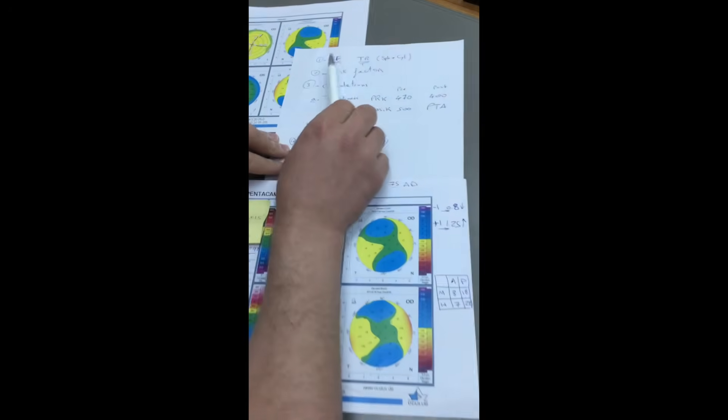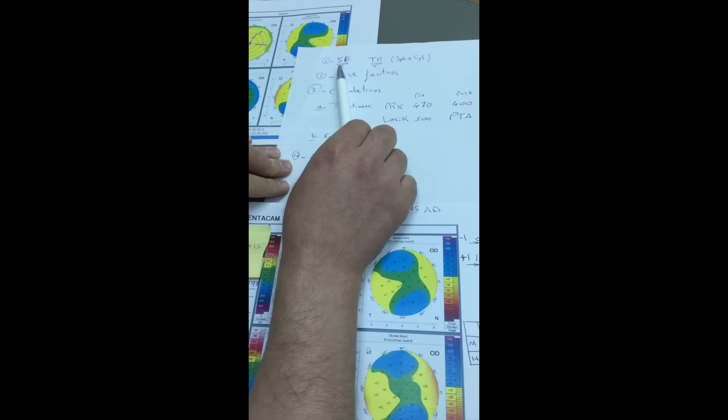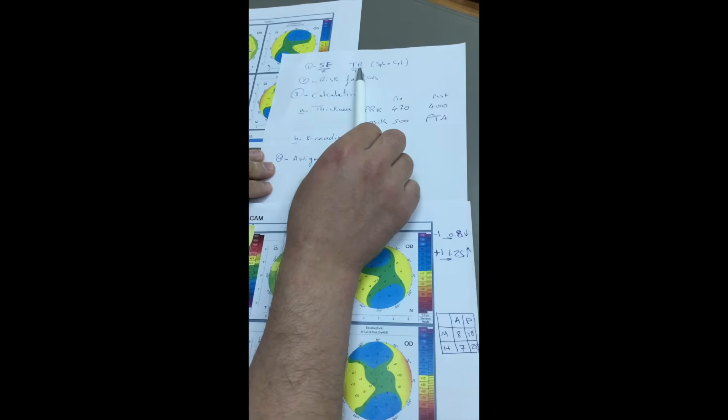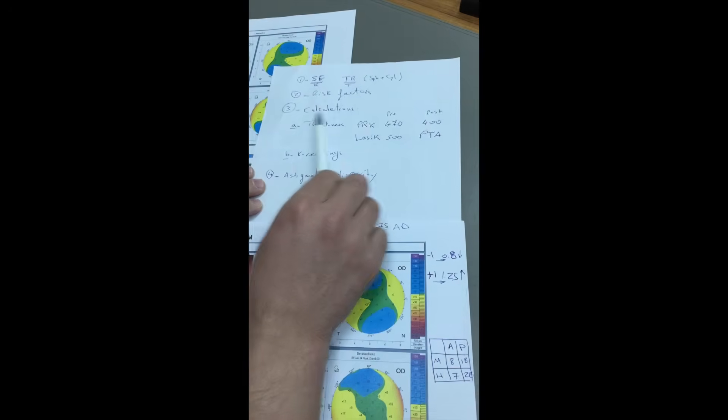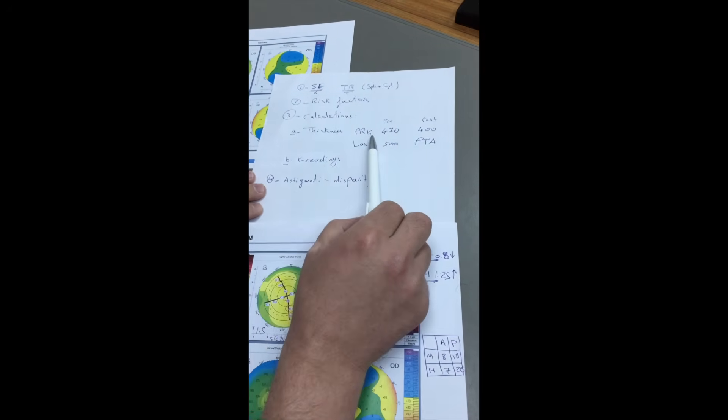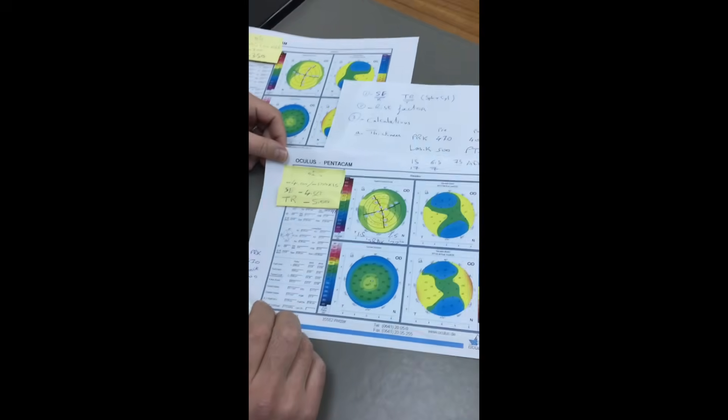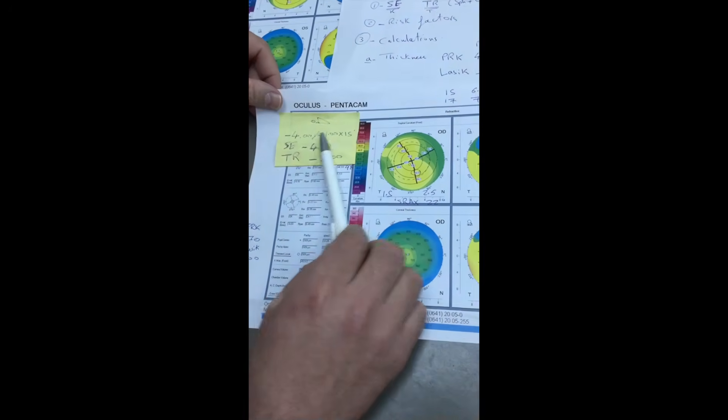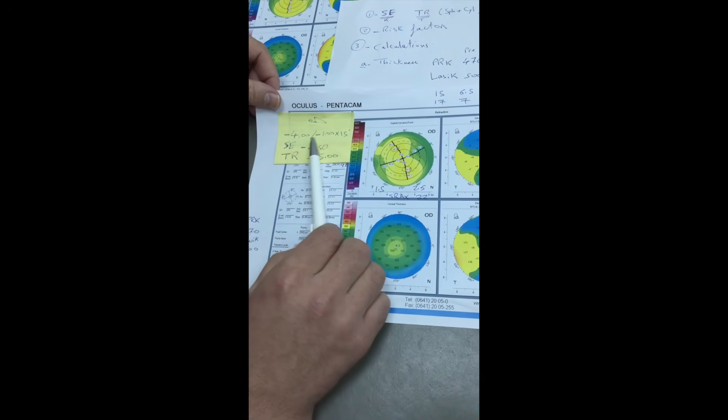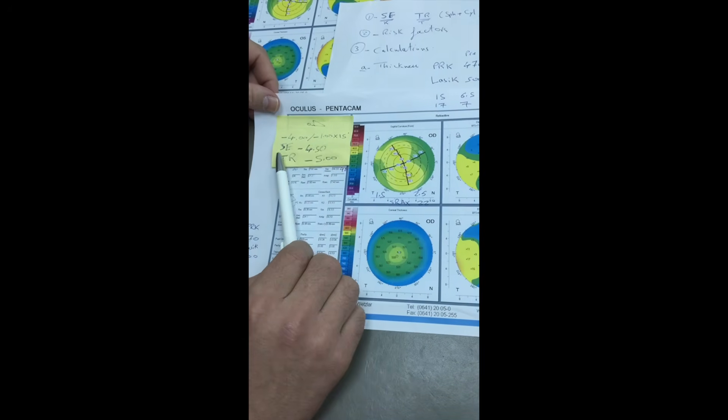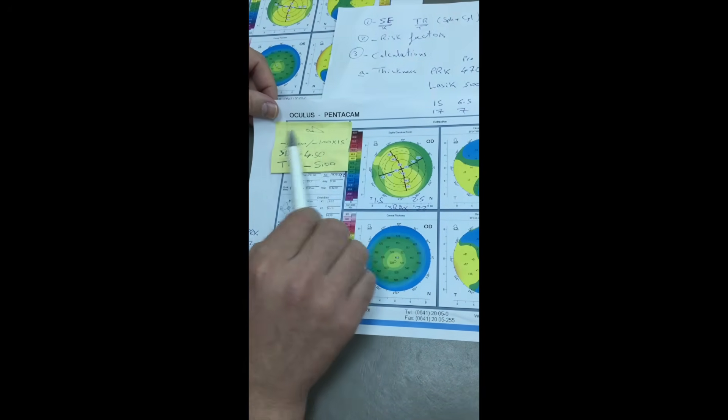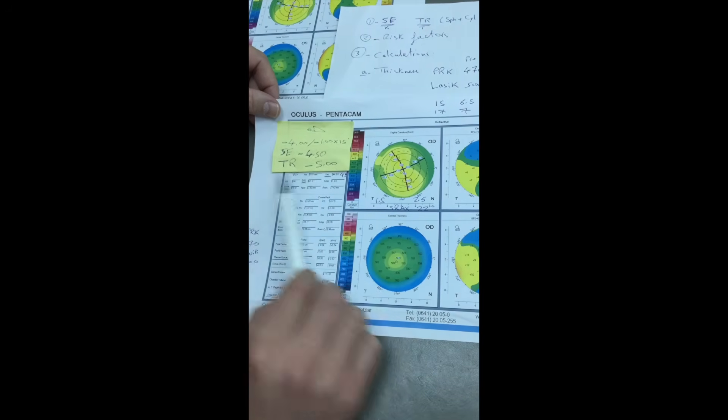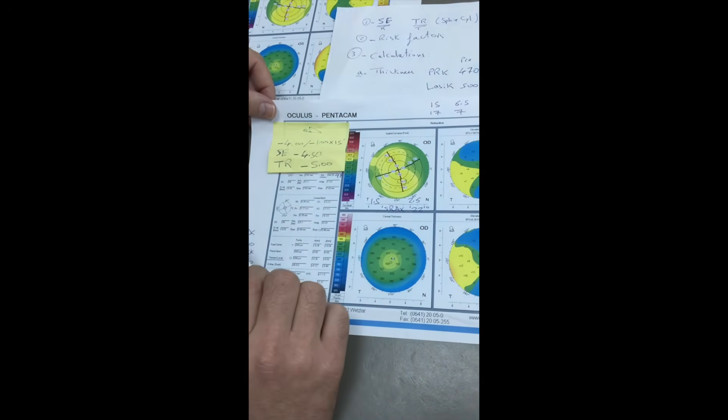Step number one is determination of the spherical equivalent and the total refraction. The spherical equivalent is important for K-reading calculations and the total refraction is important for thickness calculations. Let's start with this example. This is a case, right eye for a patient, minus four, minus one at 15. The spherical equivalent is minus 4.5 and the total refraction is the algebraic sum of both the sphere and cylinder and it is minus five in this case.